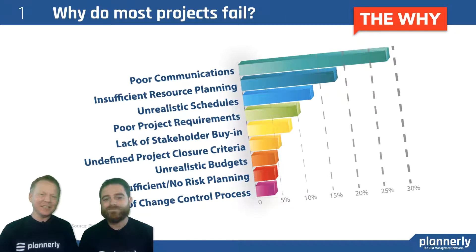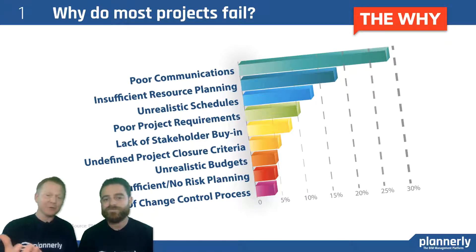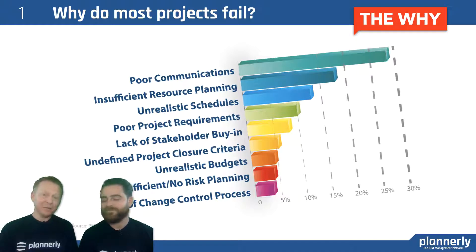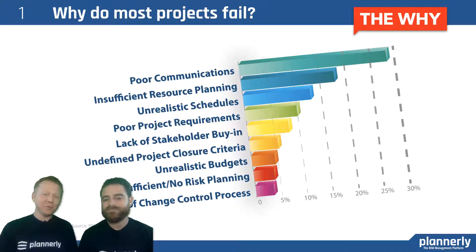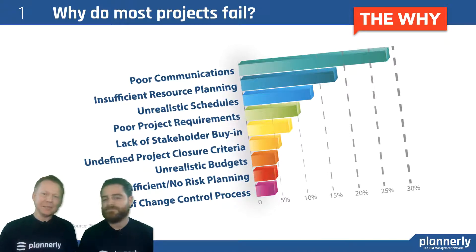We see this in some statistics here from PMI. They say that mostly the reasons for failure on a project are poor communication, insufficient resource planning, and unrealistic expectations. Those are the top three, and they're all related to things that we can plan for.